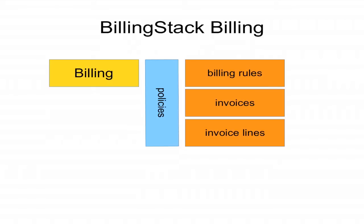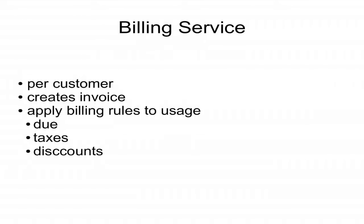There is the billing service, which takes the billing rules you have — which can include discounts, add-ons, and other things — before creating the invoice. It has the invoice with a lot of invoice lines; for example, a day in a week can be an invoice line. It also has policies for when you should be creating the invoice. It applies billing rules to usage, including taxes, due dates, and discounts.